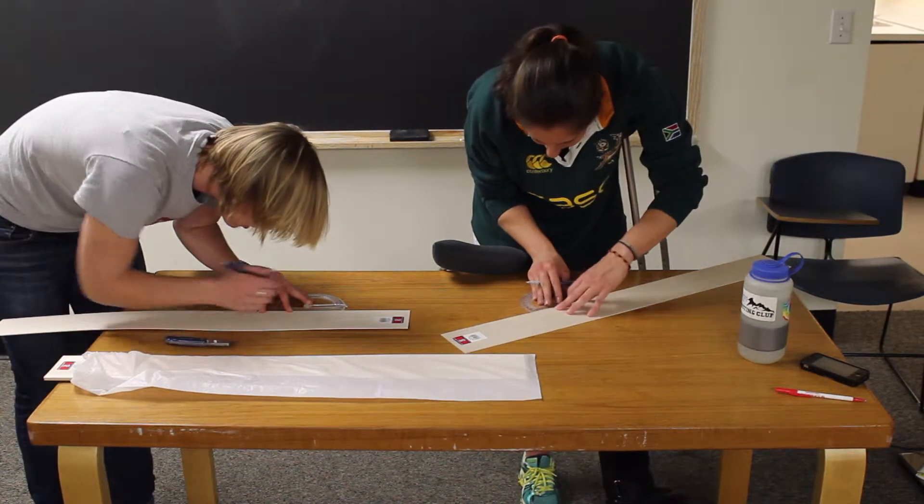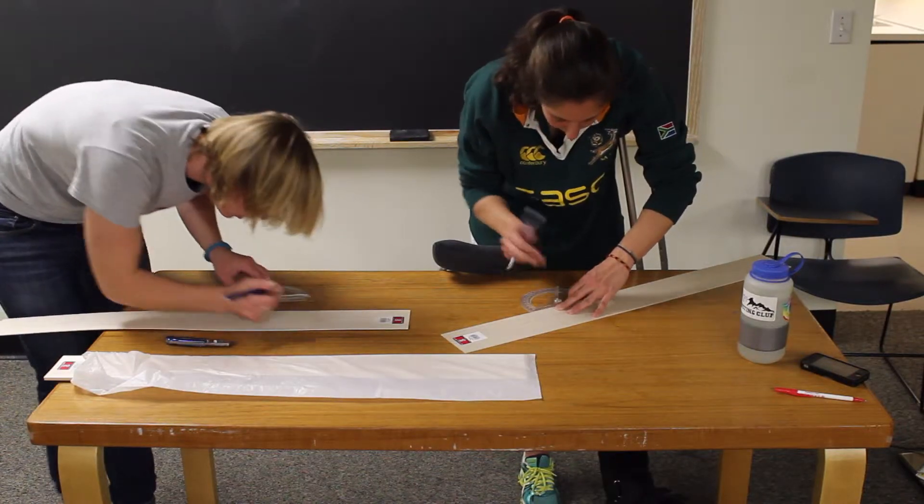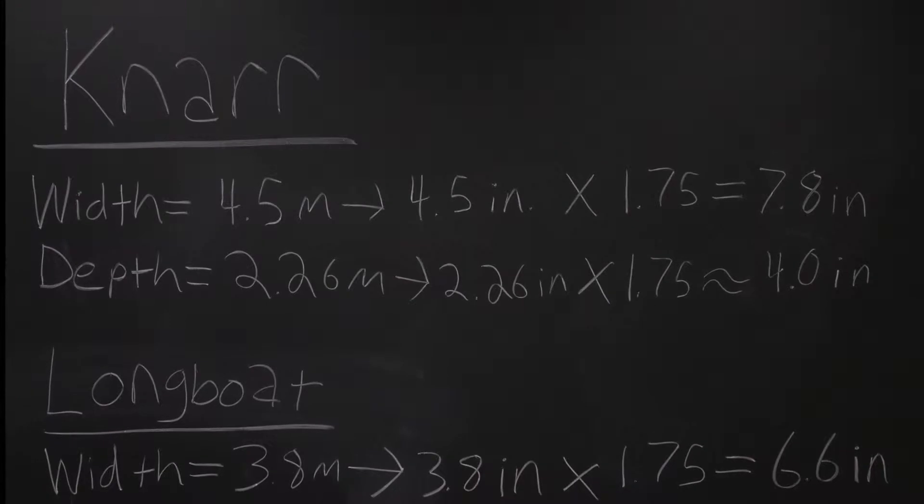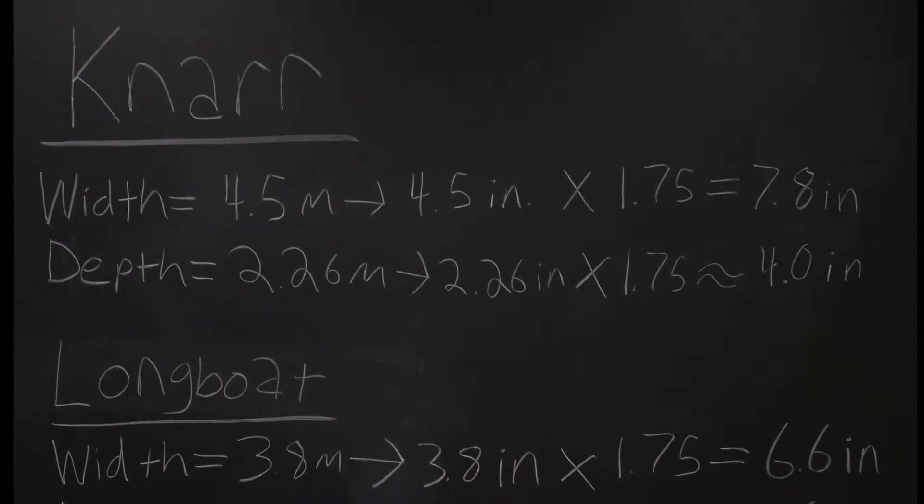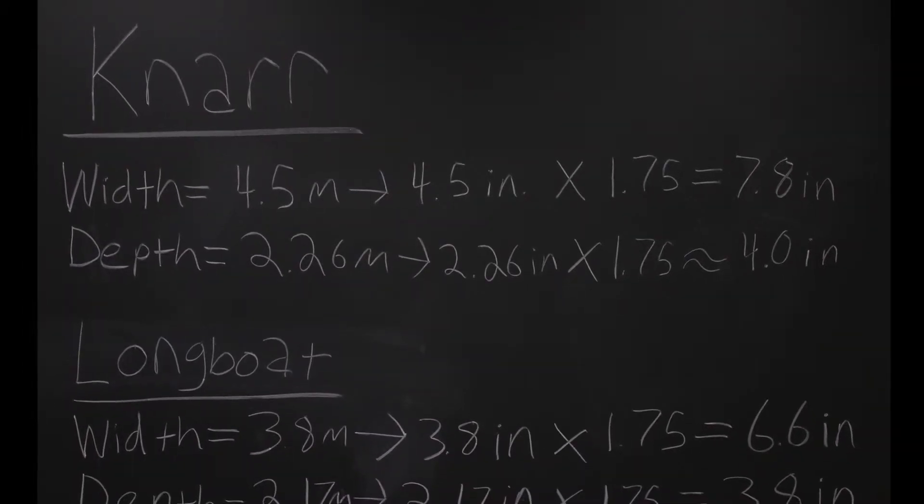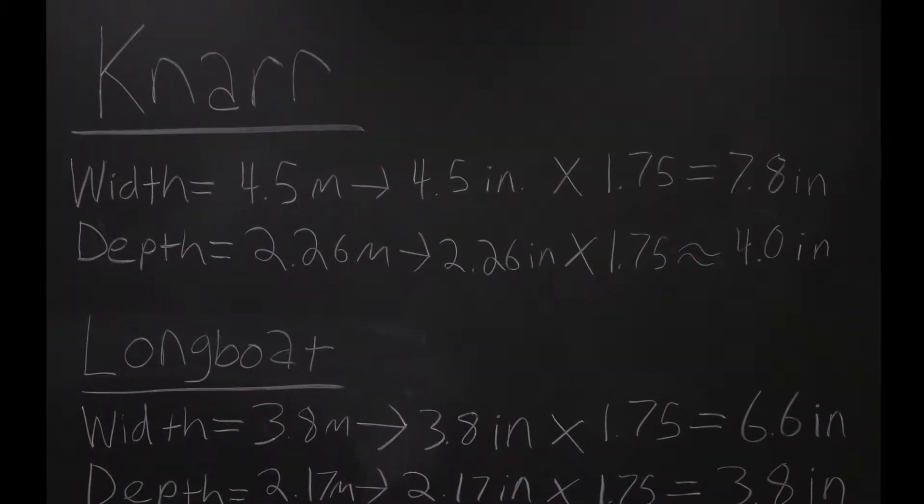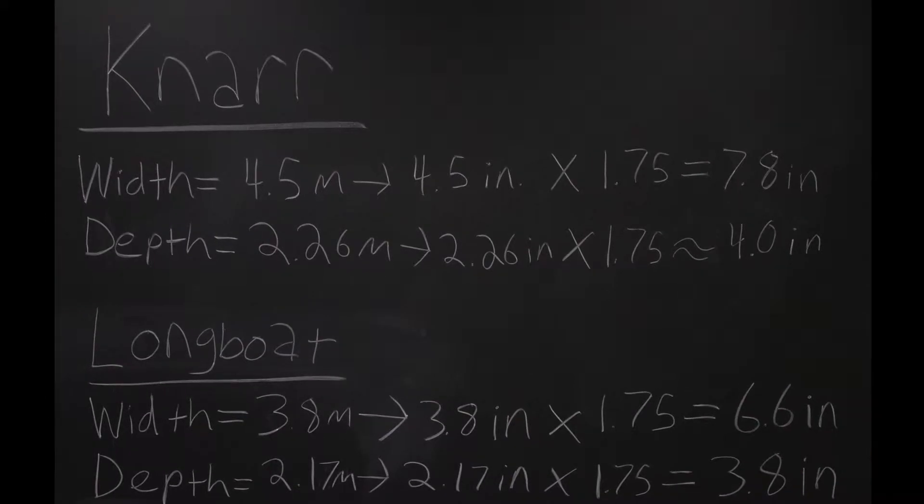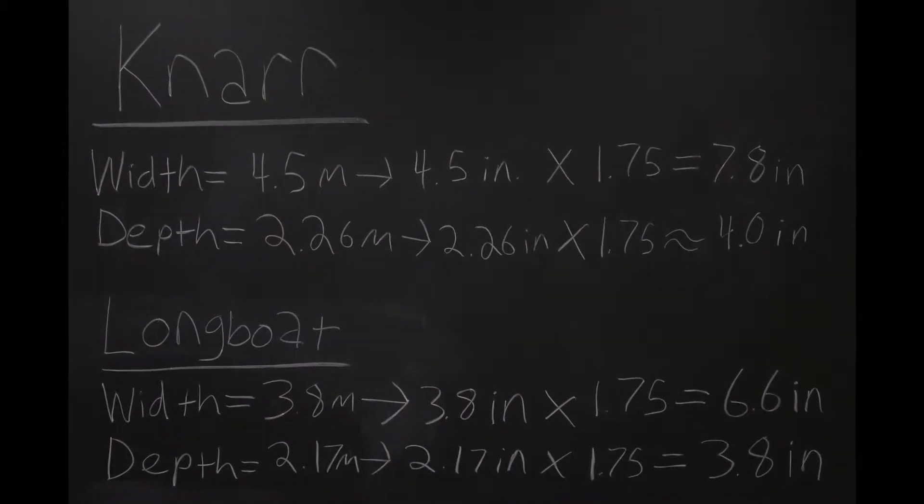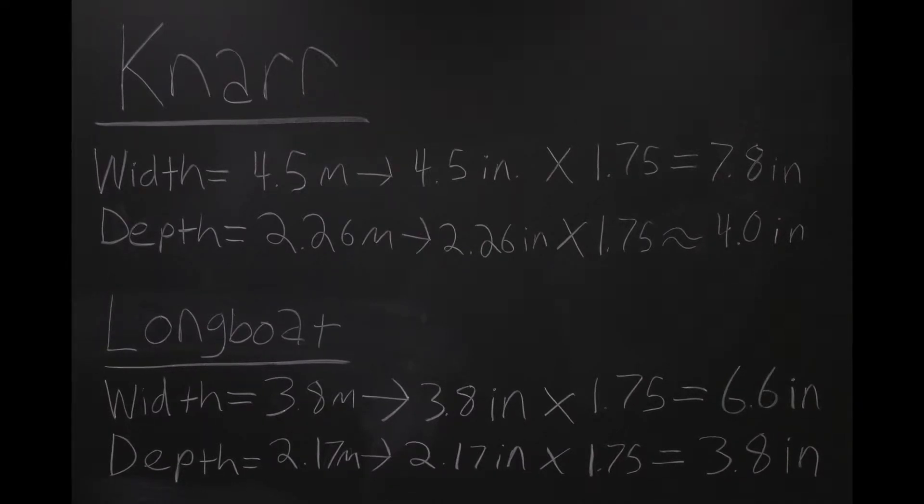We decided to make the cross-section for each of our boats 16 inches in length. For the width and depth of the boats, we first scaled down the measurements from the museum website so that 1 meter equaled 1 inch, and then we multiplied those numbers by 1.75 to maximize our boat sizes. The final widths and heights for the boats were 7.8 inches wide and 4 inches deep for the knarr, and 6.6 inches wide and 3.8 inches deep for the longboat.